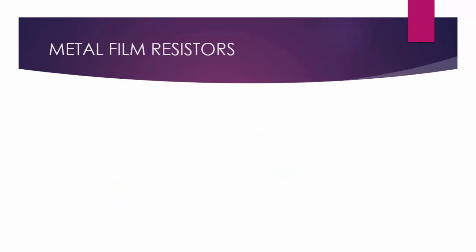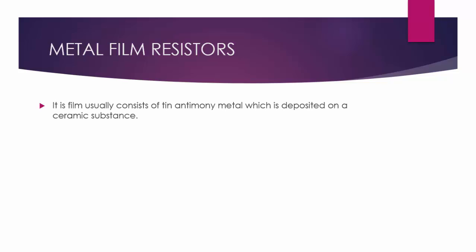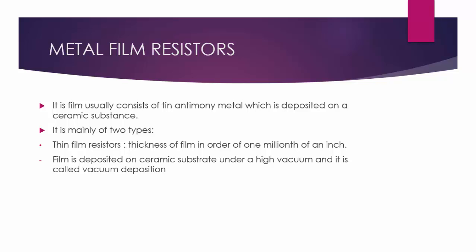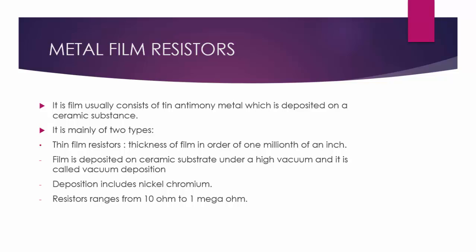The third type of fixed resistor is the metal film resistor. The film usually consists of antimony metal deposited on a ceramic substrate. Metal film resistors are divided into two parts. First is the thin film resistor, where the thickness of the film is on the order of one millionth of an inch. The film is deposited on a ceramic substrate under high vacuum — a process called vacuum deposition. The metals used are nickel and chromium. The resistance ranges from 10 ohms to 1 mega ohm, with a power rating of up to 5 watts.